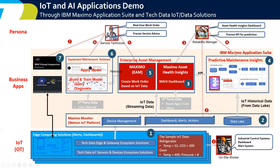After a work order is created, the service technician takes the ticket and goes on-site to work. On-site, they may need help — the Maximo Assistant uses manual data, historic data, and historic ticket handling data to provide cognitive suggestions. Service technicians can also take an on-site picture, upload it to the cloud and to Maximo, and get recommendations. This puts everything together, showing how IBM Maximo Application Suite and TechData IoT solutions work together to apply to the enterprise context.